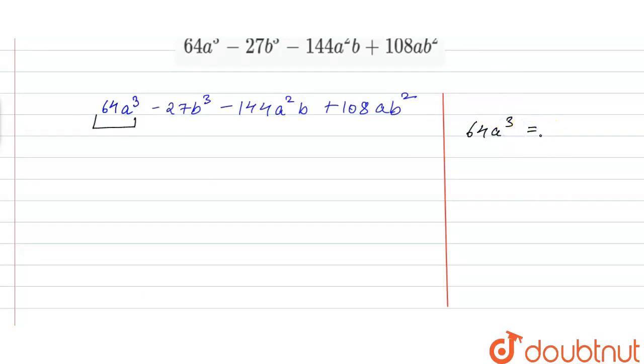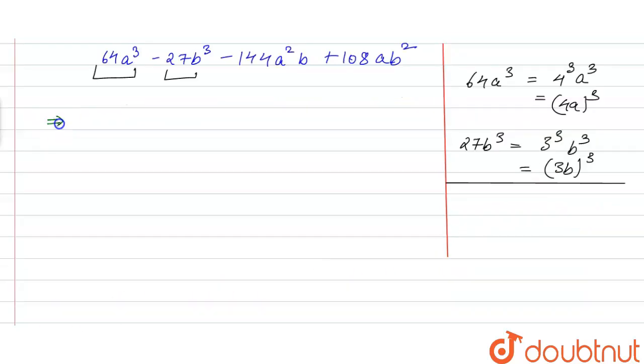So it can be written as (4a)³. Similarly, 27b³ can be written as 3³ times b³, which is equal to (3b)³. So writing this 64a³ as (4a)³ and minus (3b)³, and the rest terms as it is: minus 144a²b plus 108ab².